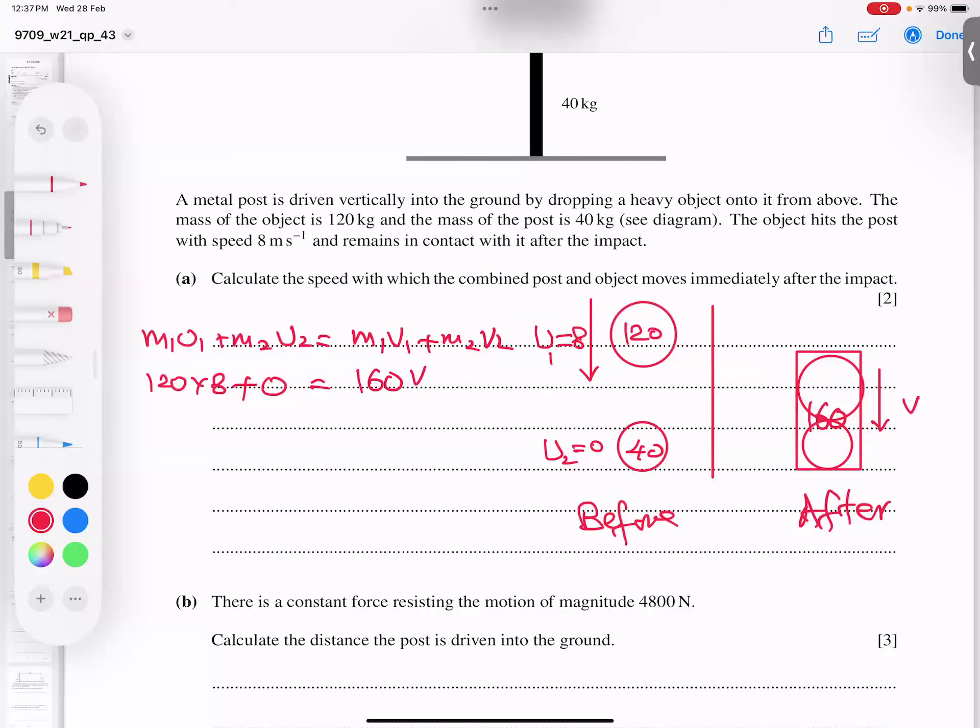Mass 1, mass 2 add, I got 160 in the place of this. So 160, and because this is V and this is V, both are common. Here I get 0 and 0 cancel out, so here I'm getting 12 into 8 divided by 16. Ultimately I get 6 meter per second. Alhamdulillah.